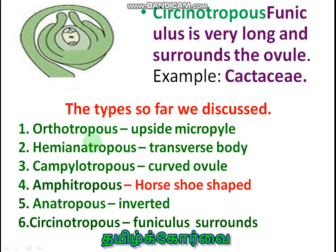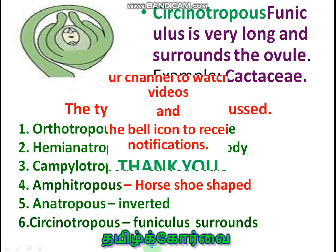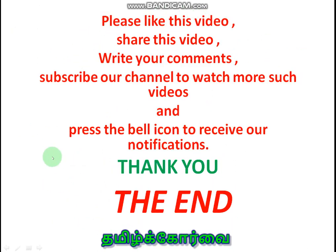To remember all the types: upside micropyle for orthotropous; transverse body for hemianatropous; curved ovule for campylotropous; horseshoe-shaped for amphitropous; inverted for anatropous; and funiculus surrounds ovule for circinotropous.